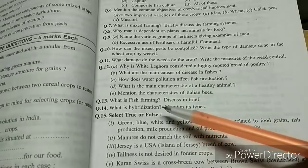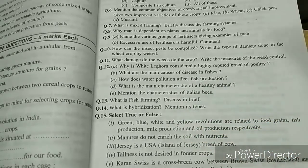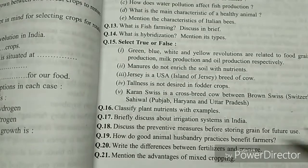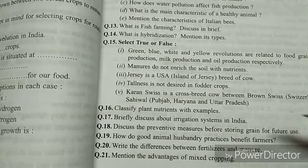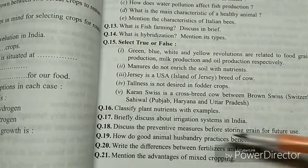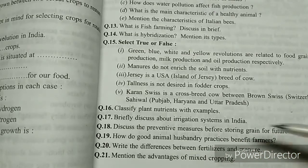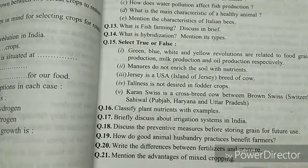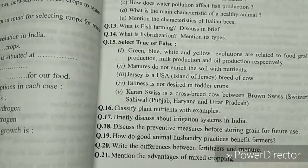What is hybridization? — that's important for two marks. The types are generally not asked. Discuss the preventive measures before storing grain for future use — that's the 18th question, important for us. How do good animal husbandry practices benefit farmers? — that can come for three to five marks. Differences between fertilizers and manure is another important question.